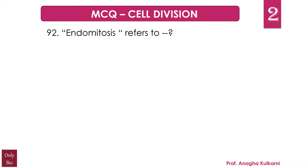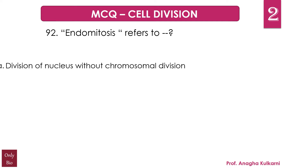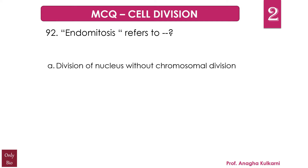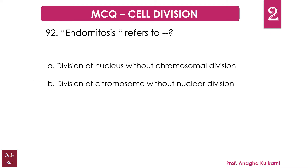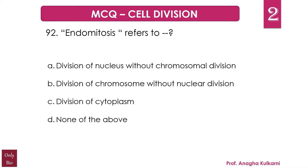The next question: Endomitosis refers to — A. Division of nucleus without chromosomal division, B. Division of chromosome without nuclear division, C. Division of cytoplasm, and D. None of the above. The correct answer is B. Division of chromosome without nuclear division.